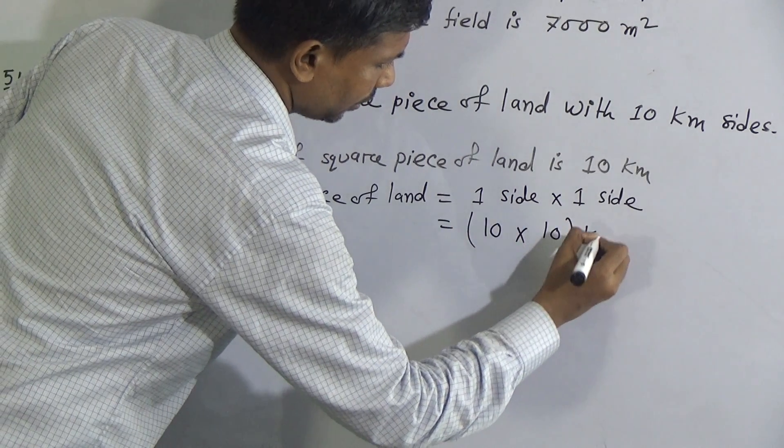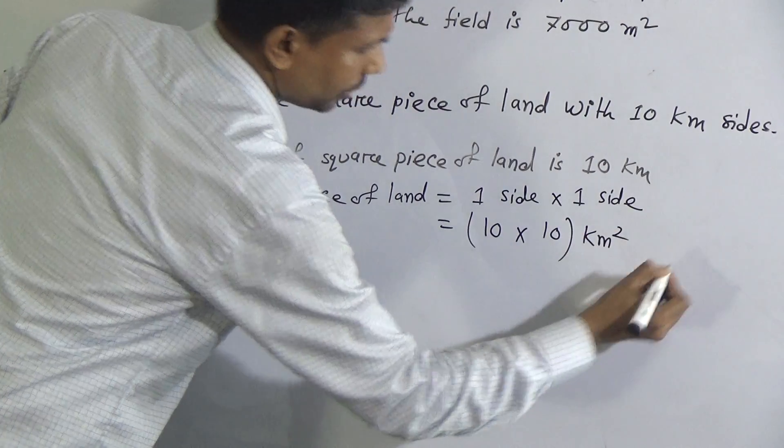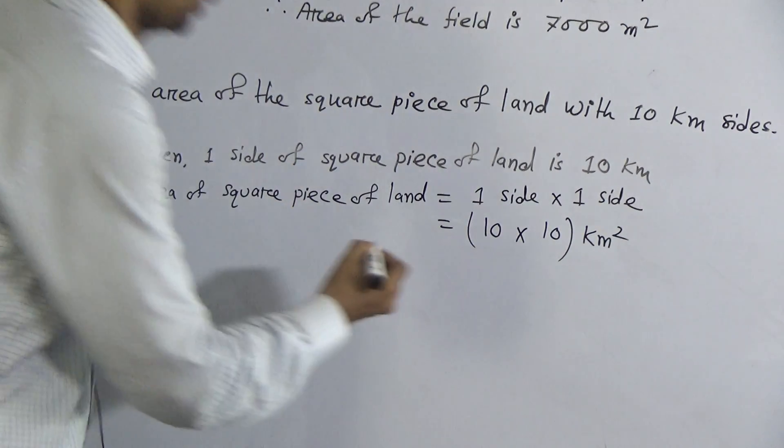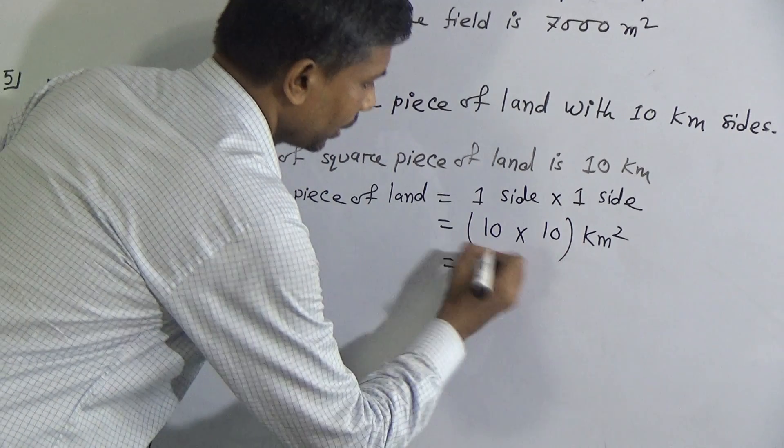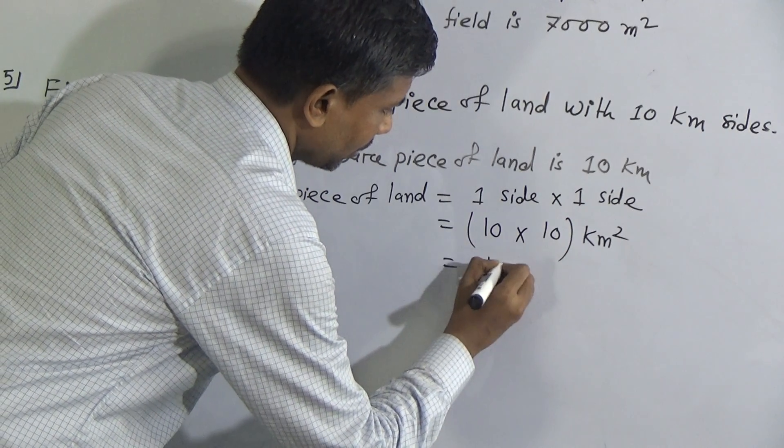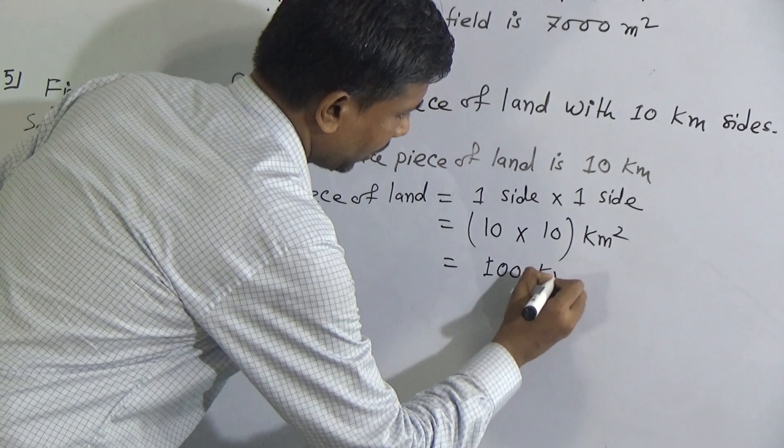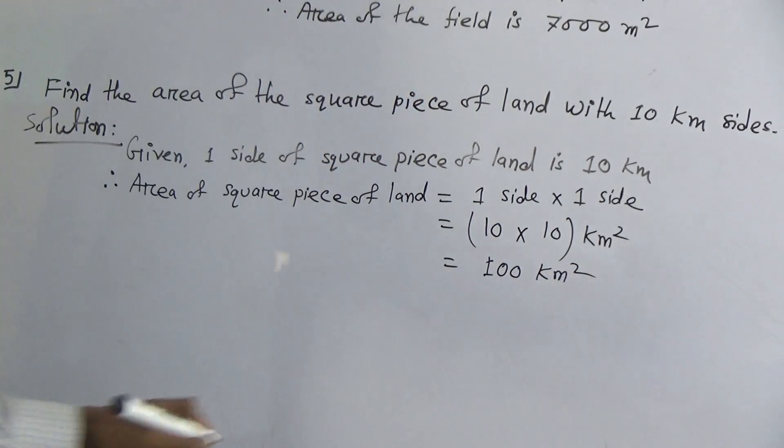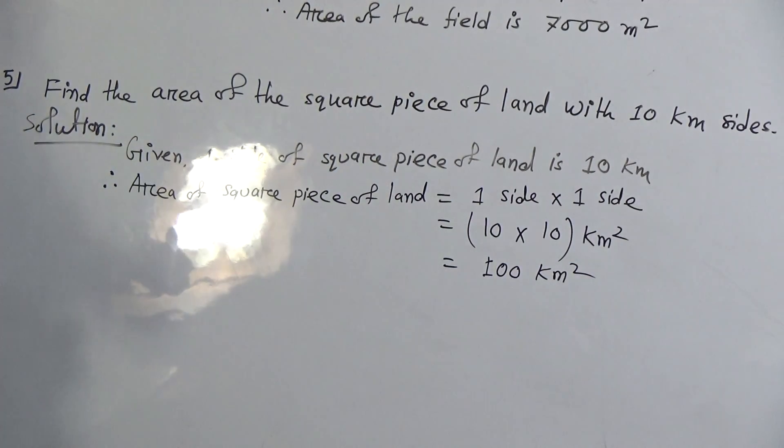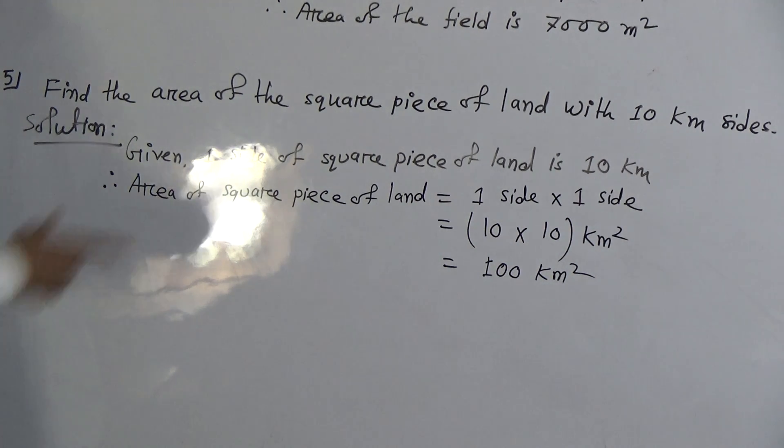Now, multiply 10 into 10, that means 100, 100 square kilometer. Therefore, the area of the square piece of land is 100 square kilometer.